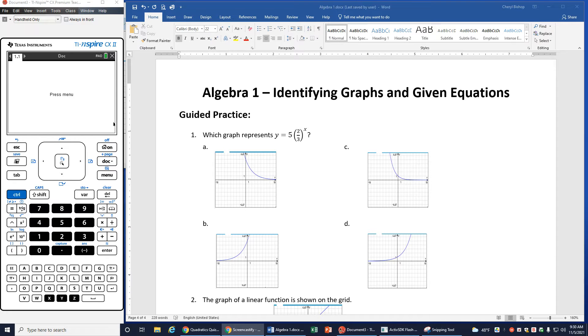Our first problem asks which graph represents y equals 5 times 2 thirds to the x power. So what I want to do is I want to use my graphing calculator to graph this equation, and then just compare and see which graph matches.